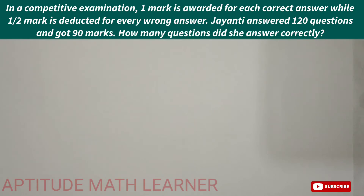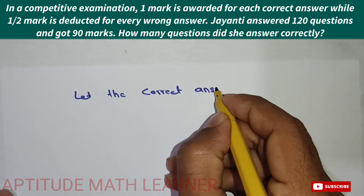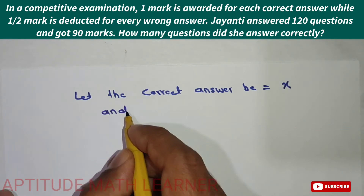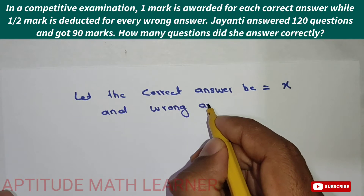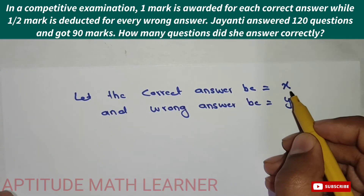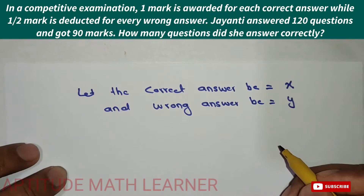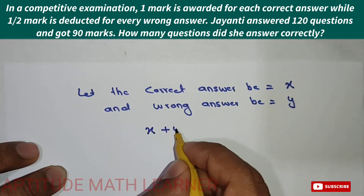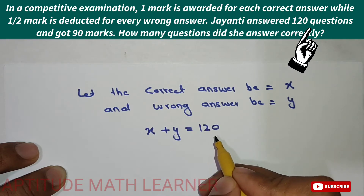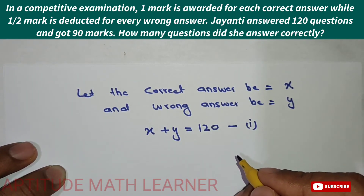To solve this, let the correct answers be x and the wrong answers be y. The total number of questions is x plus y equals 120. This is Equation 1.